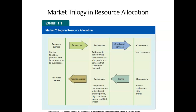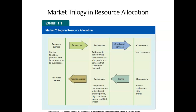This is what we call the market trilogy in resource allocation. Financial, physical, and labor resources are provided to businesses, which adds value to the business. That business then provides goods and services to consumers, and in exchange the business hopes to earn a profit. That profit then becomes compensation for the resource owners. You'll hear more about this market trilogy as we go throughout this course.